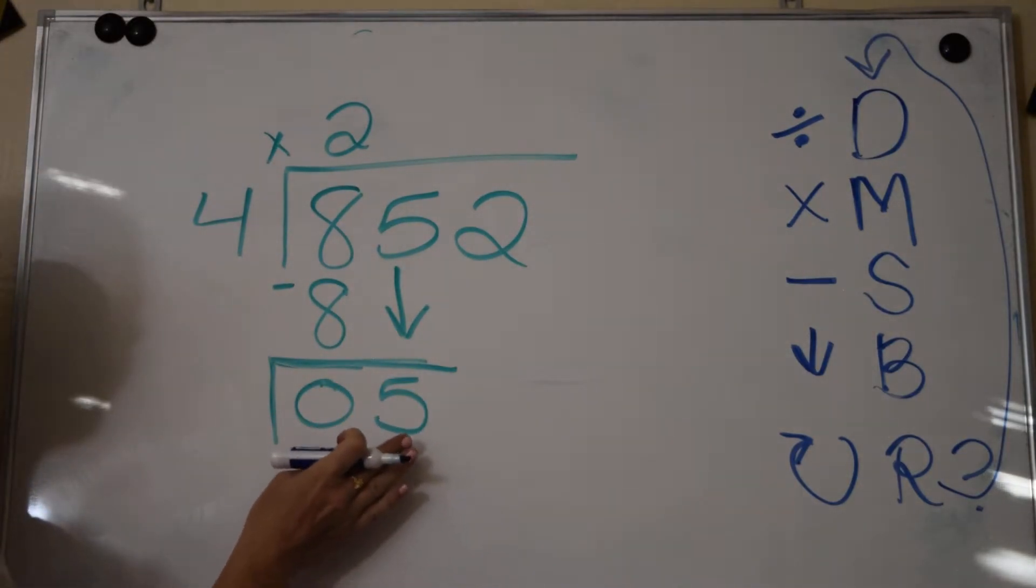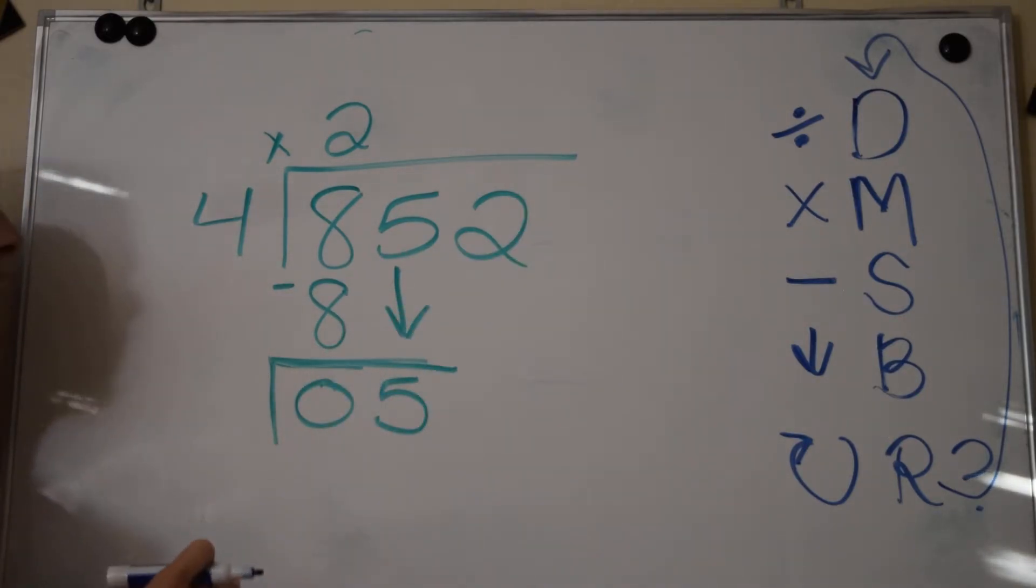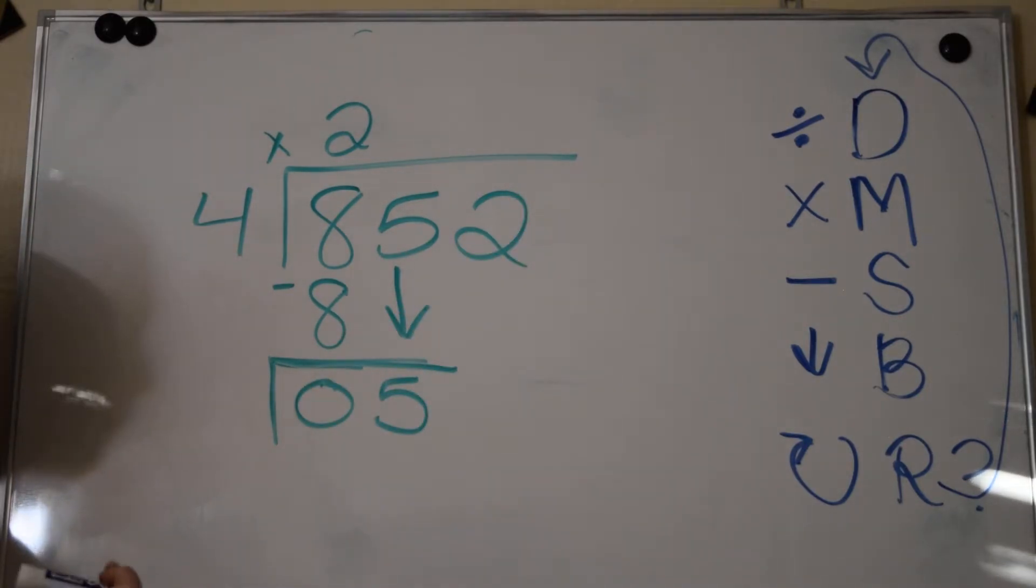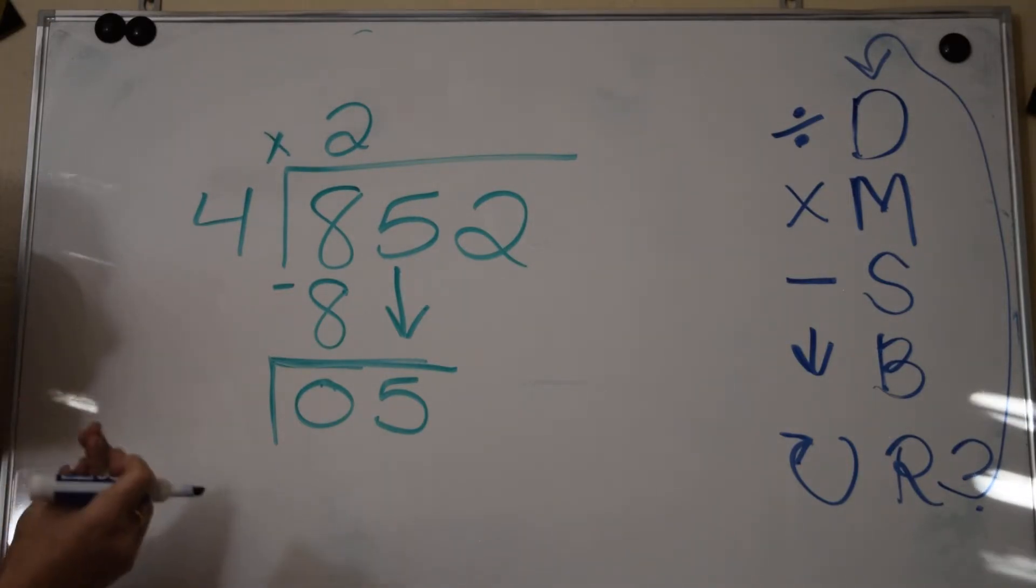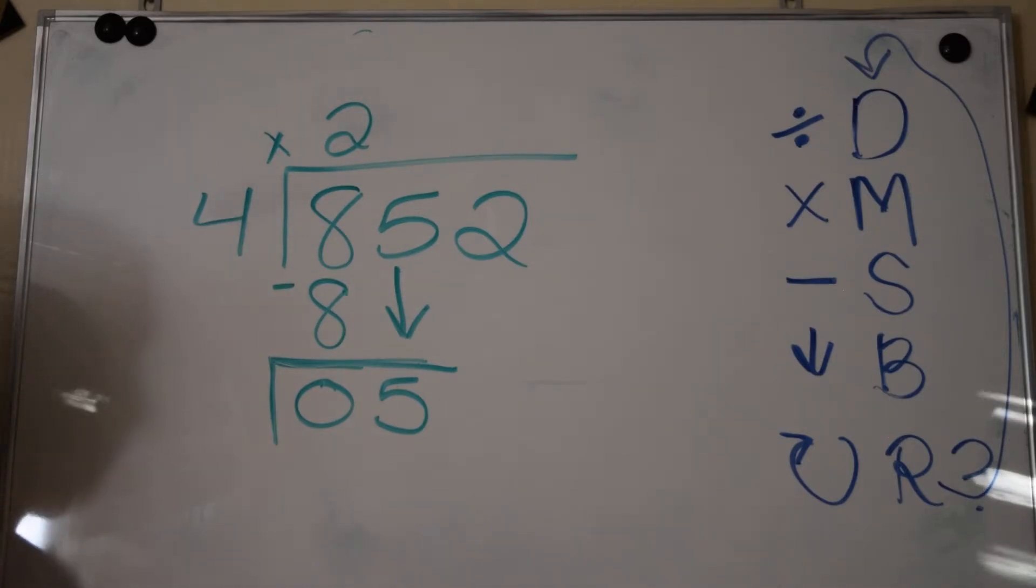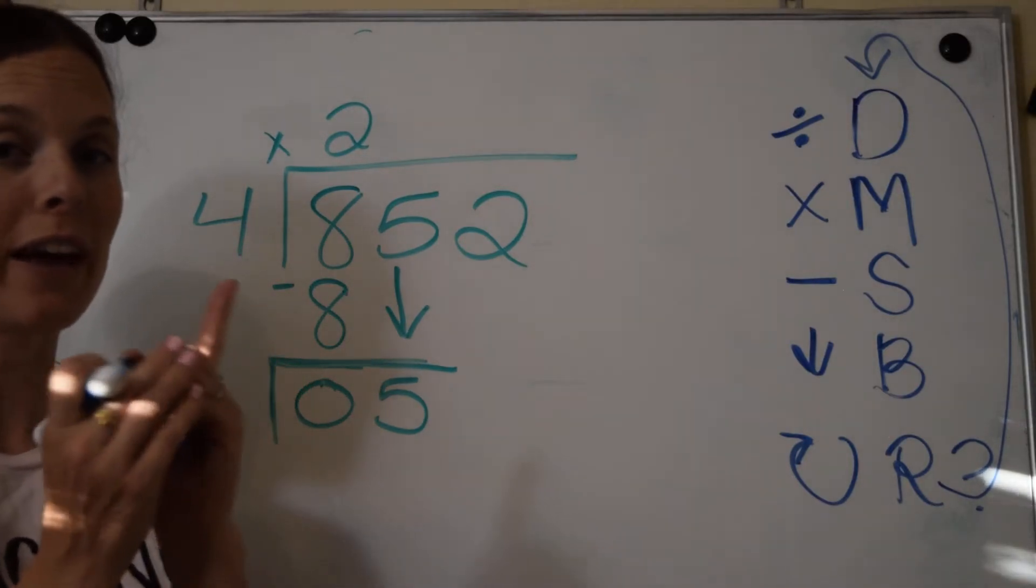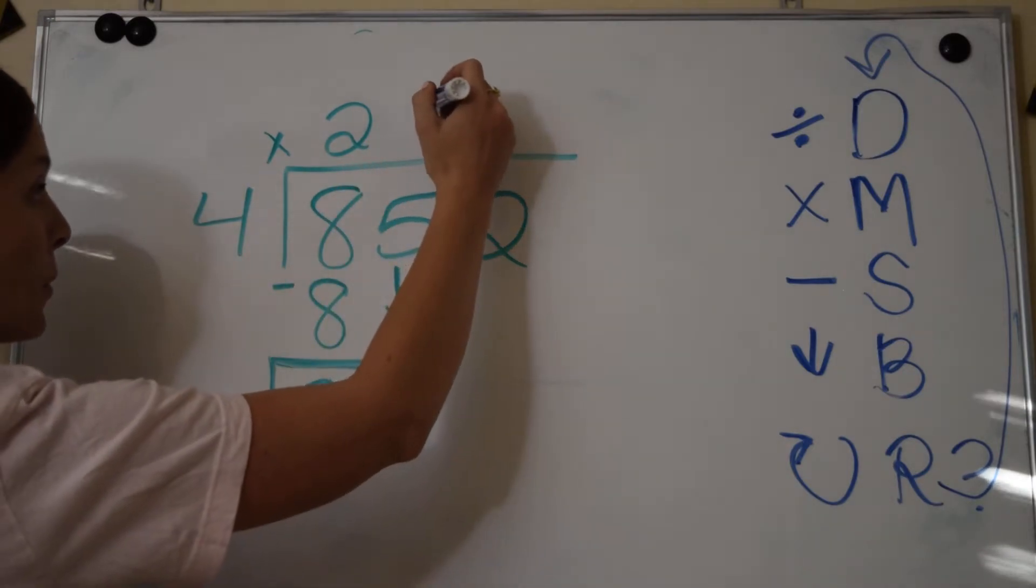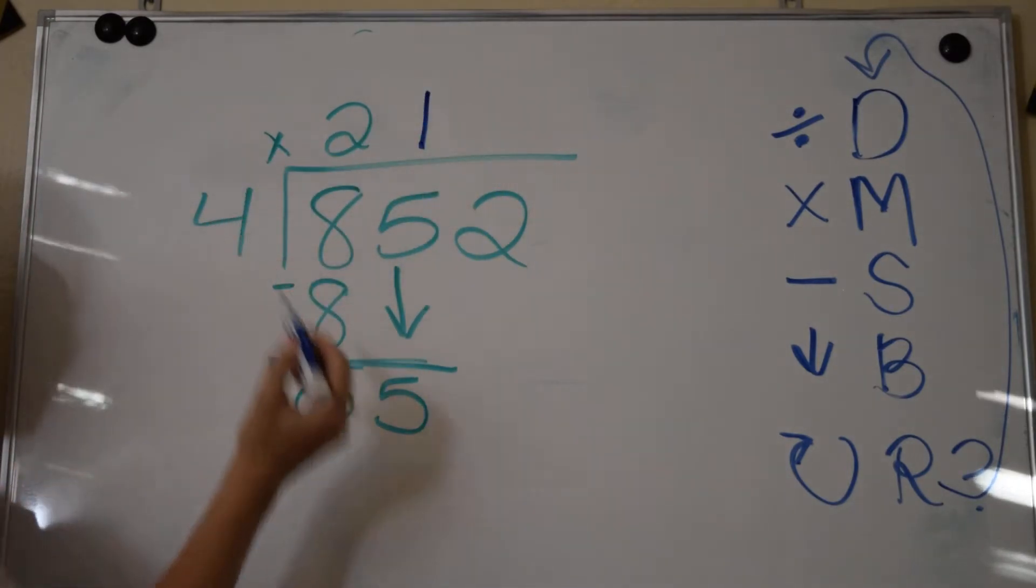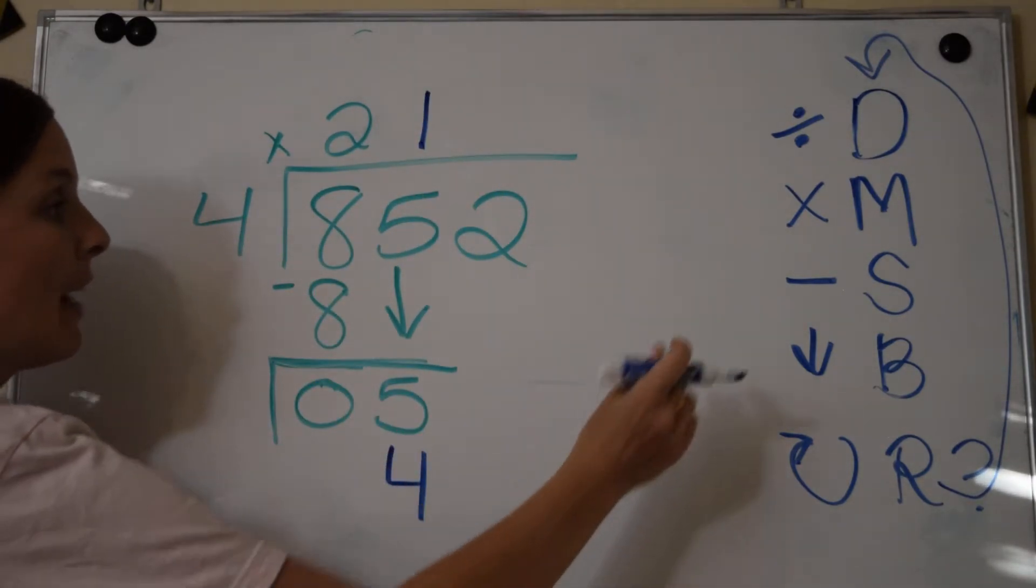We're dividing 5 divided by 4. That doesn't come out evenly, but you're still needing to see how many times can it fit. 4 can fit into 5 just once, so we're going to put a 1. 1 times 4 is 4.